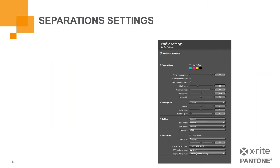Another feature found in the profile settings after measuring the color patches is called separation. While separation settings are in the software, we highly recommend leaving them at the default settings unless you know how your printer behaves and fully understand each adjustment. First in the list of separation settings is the option for full black separation. This setting optimizes profile separations to use black in replacement of CMY whenever possible, yielding heavy black ink usage and reduced CMY ink usage. While cost effective, the print could look more coarse or rough due to the adjustment.